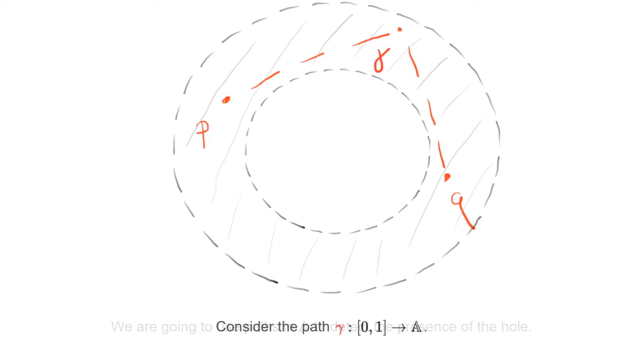We already encountered before the path gamma. It goes from P to Q using the upper part of the annulus. Instead of gamma, we could have chosen another path, let's call it nu, that goes from P to Q using the lower part of A. Or furthermore, we could have chosen a path that makes a whole loop around the hole before reaching Q.